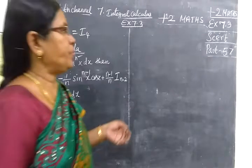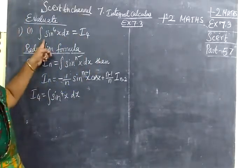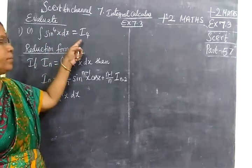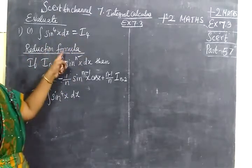Today we see part 57, exercise 7.3. Now we see integral sin power 4x dx. This we treat as I₄. We are using reduction formula.